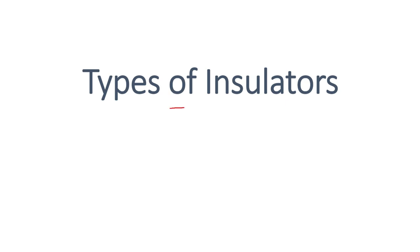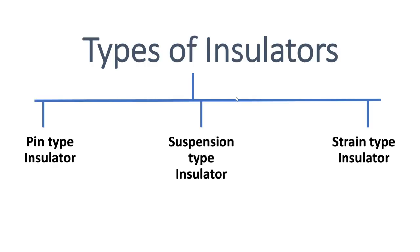In this video we are going to see about the types of insulators in power systems. In power systems we have three types of insulators: pin type insulator, suspension type insulator, and strain type insulator.